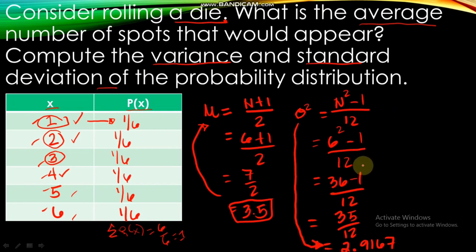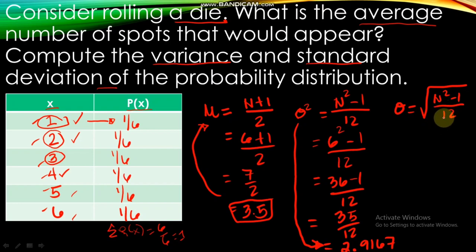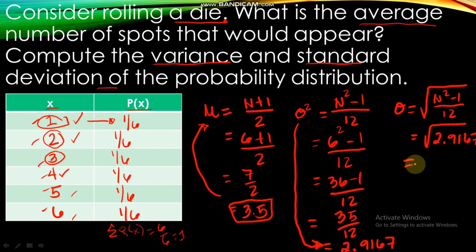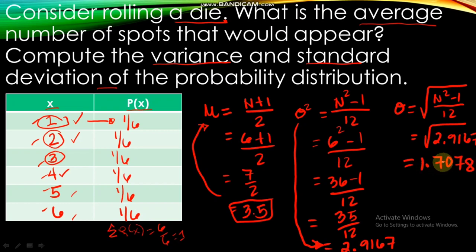For the standard deviation, it is the square root of the variance. The formula is the square root of (n² - 1) / 12. The variance is 2.9167, so the standard deviation is the square root of 2.9167, which is approximately 1.71. That's all for today.